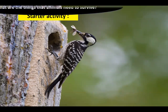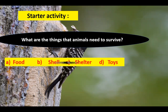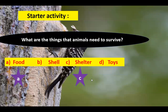Starter activity: what are the things that animals need to survive? Option A: food. Option B: shell. Option C: shelter. Option D: tools. Let's check the answers. The answer is Option A and Option C — that means food and shelter.